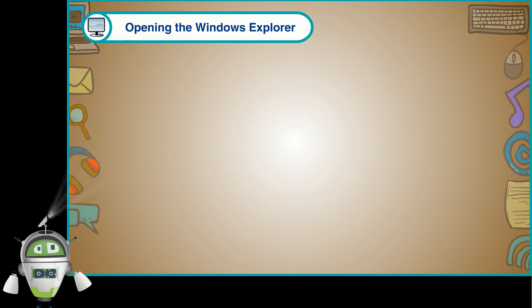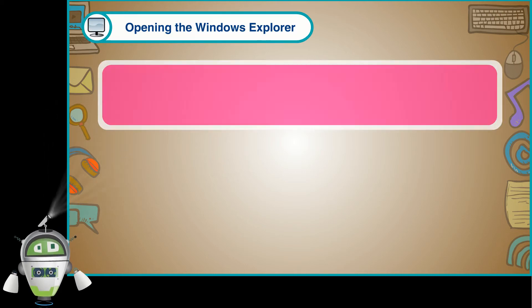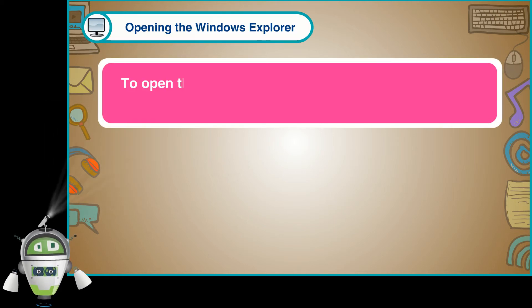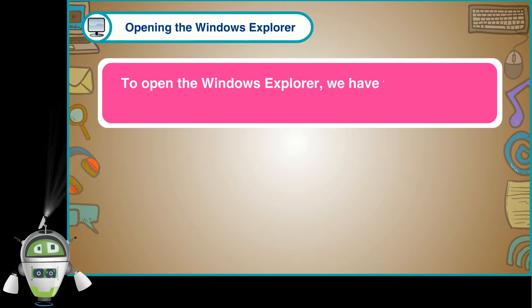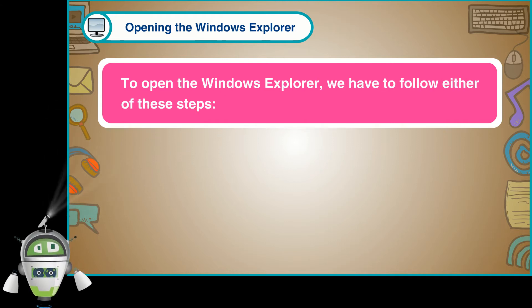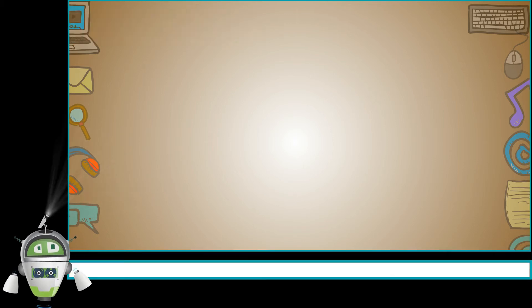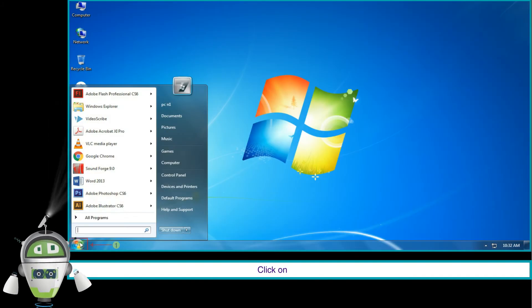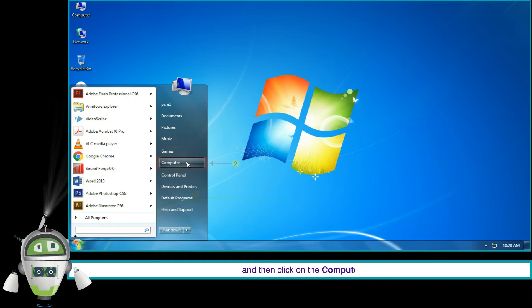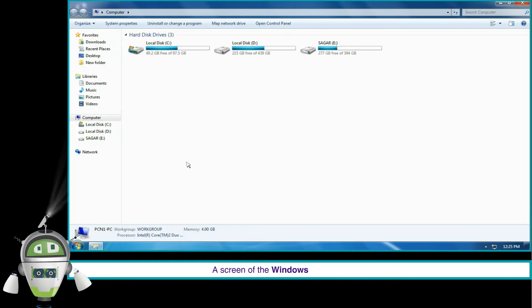Opening the Windows Explorer. To open Windows Explorer, we can follow either of these steps. Using the Start Menu: click on the Start button and then click on Computer. A screen of the Windows Explorer will be seen.